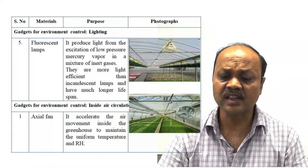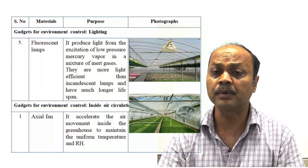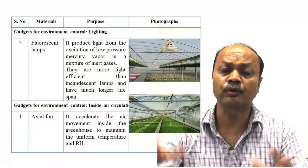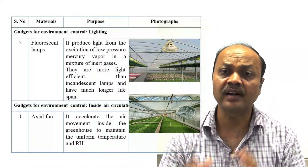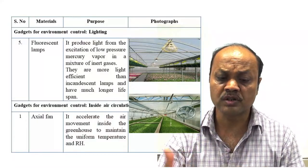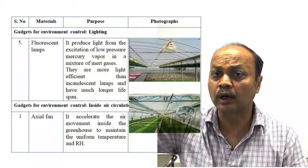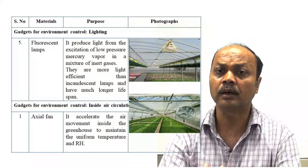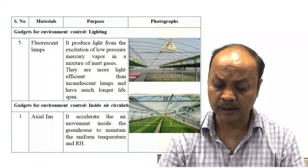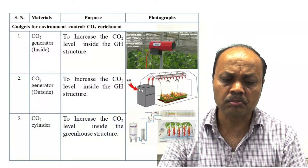Circulation fans are used because at various locations inside the greenhouse, relative humidity and temperature may not be uniform. Between the plant canopy or at various locations, temperature and relative humidity variation occurs. Circulation fans are used to accelerate air movement inside the greenhouse — so that air velocity inside the canopy will be higher and the microclimate will be more or less uniform — so that plant performance can be good.